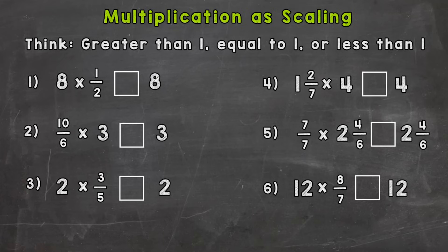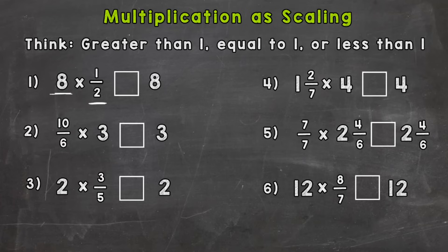For number 1, we have 8 times a half. We're going to take a look and see what that half does to our 8. So we're multiplying by something less than 1. And you can see at the top of your screen, we need to think: greater than 1, equal to 1, or less than 1. So 8 times a half — and we know a half is less than 1. When we multiply by something less than a whole, we're actually going to drag this 8 down. We usually think our answer is going to increase when we multiply, but that's only true if you multiply by something greater than 1.